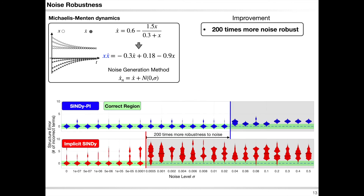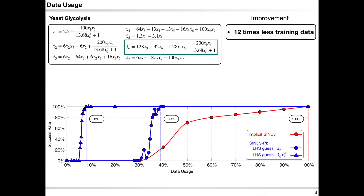By using SINDy-Pi, we see a huge noise robustness improvement compared with previous implicit SINDy. For example, when generating noisy derivatives by adding Gaussian noise, we achieve up to 200 times more noise robustness improvement. Moreover, SINDy-Pi also needs less training data than implicit SINDy — for example, it can use up to 12 times fewer data points than implicit SINDy to correctly identify the yeast glycolysis model.